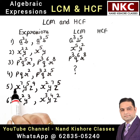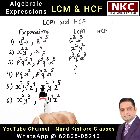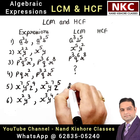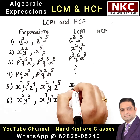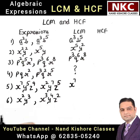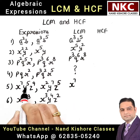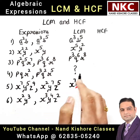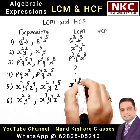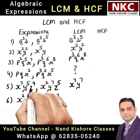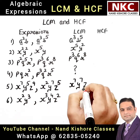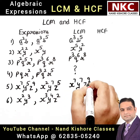Coming to number 5: X power 7 and X square — take X power 7. Y to the power 5 and Y to the power 7 — take Y to the power 7. Z to the power 9 — I will take that as well.